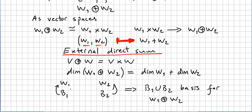In a simple way, if B_1 is a basis for W_1 and B_2 is a basis for W_2, that implies that the union of B_1 and B_2 is a basis for the direct sum W_1 ⊕ W_2.